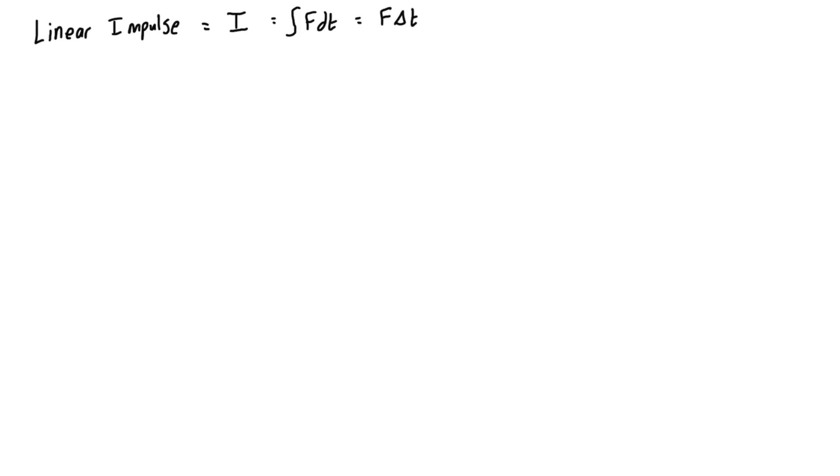Often we'll be seeing it written as simply as F times delta t. This assumes a very common case where we have a constant force, but like I said it is just the product of force multiplied by the time that the force acts. Basically if you have an impulse on a body it's going to change the momentum in a body.